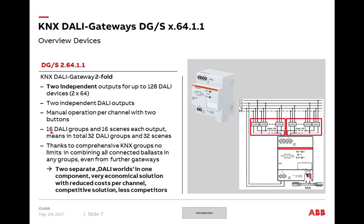For scenes and groups: DALI groups and light scenes — 16 each per channel, 32 in total for both channels. For creation of any grouping via KNX group addresses, given the large amount of group addresses and group objects available, there are no limits here. To summarize: two separate DALI worlds in one device. It is a very economical solution — it does not cost as much as two one-fold DALI devices — reducing cost per channel, and it is a very competitive solution.